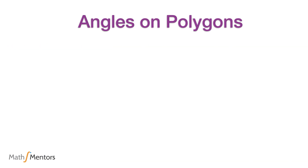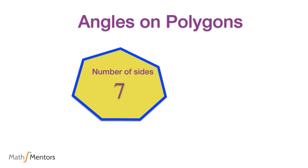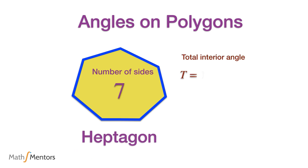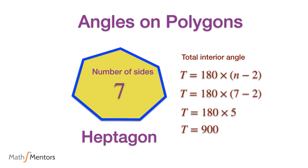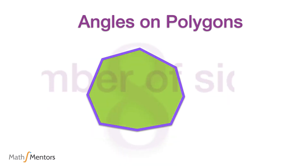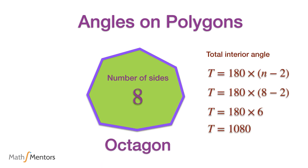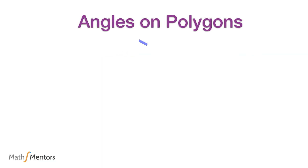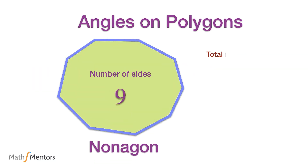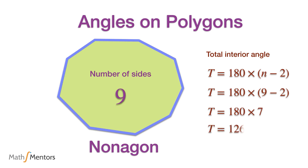If we make a polygon with seven sides, substituting n = 7 into the formula gives a total interior angle of 900 degrees — this is known as a heptagon. Similarly, an eight-sided polygon has total interior angles of 1080 degrees and is known as an octagon. A nine-sided shape is called a nonagon and its interior angles add up to 1260 degrees.